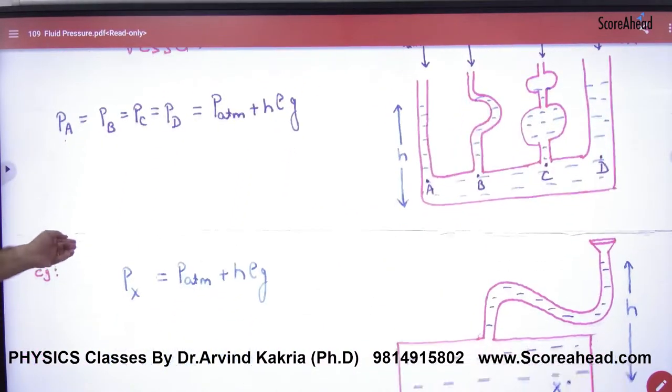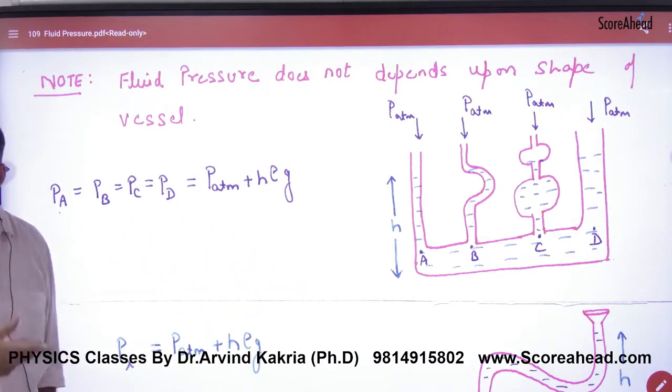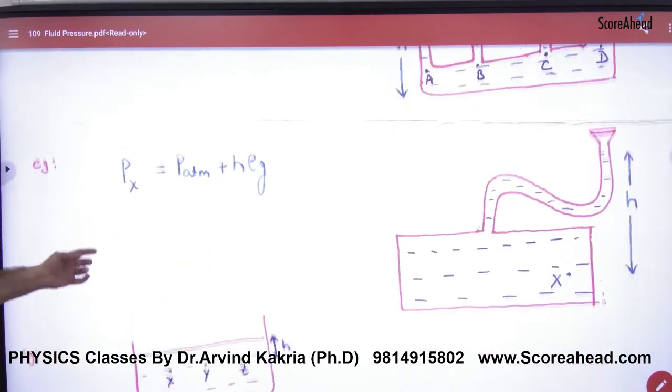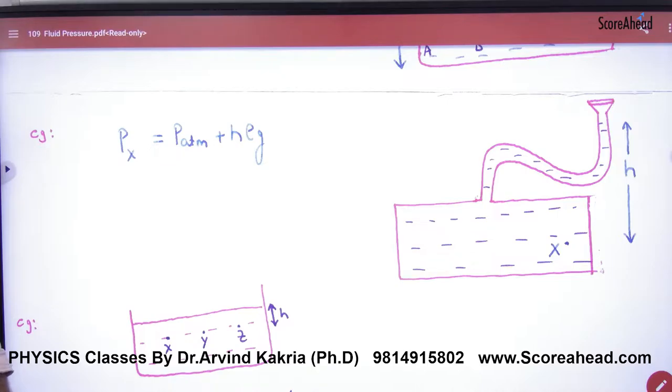Next, the point is H-ρg plus P atmospheric, because atmospheric pressure is also present. The same paradox problem applies.